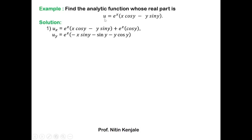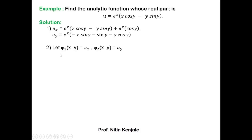Next we find u_y, the partial derivative of u with respect to y, keeping x constant. So e^x is constant, and the derivative of x·cos y with respect to y is −x·sin y. The derivative of y·sin y with respect to y is sin y + y·cos y by the product rule. So u_y = e^x(−x·sin y − sin y − y·cos y).